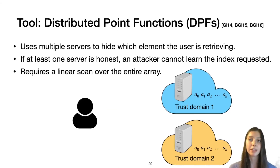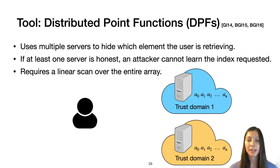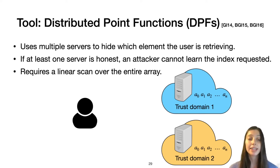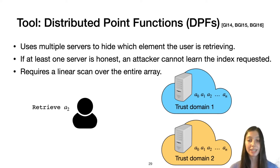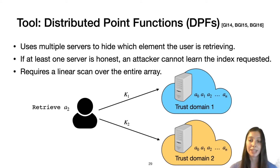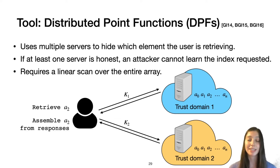We identified distributed point functions, or DPFs, as particularly well-suited for our setting. DPFs allow us to use multiple servers to hide which element in an array the user is retrieving. Two servers hold identical copies of the array, and the user wants to retrieve some element without either server learning which one. This gives us the property that if at least one server is honest, the attacker can't learn the index being requested. One disadvantage is that it requires a linear scan over the entire array — however, the scan is fast in practice because it just requires AES evaluations, which can be implemented efficiently in hardware.